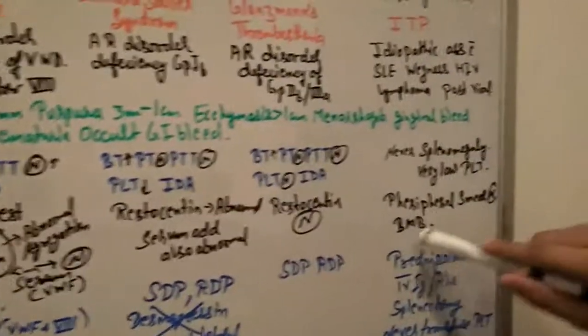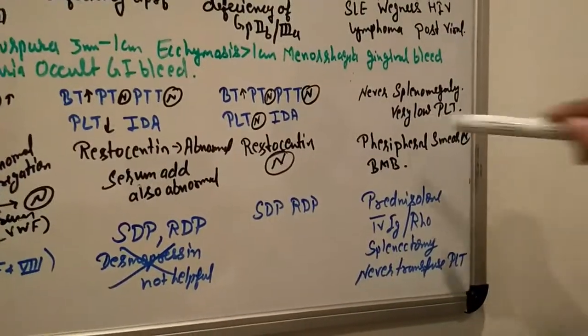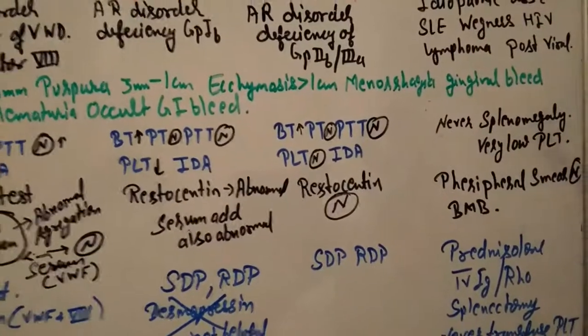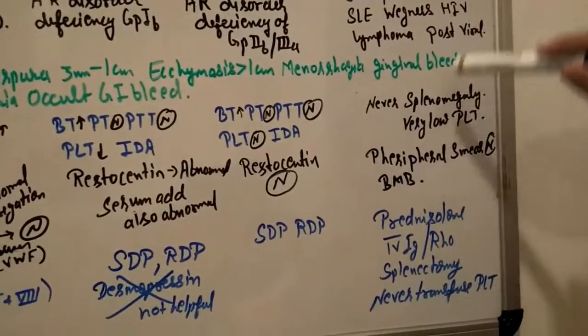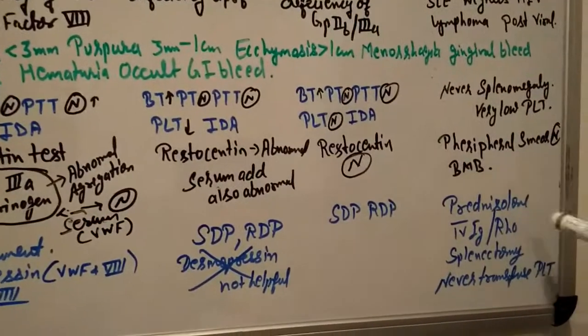Why do we need to give immunosuppressants like prednisolone? Because the autoimmune system is working excessively, idiopathically eating platelets one by one. That's why there is severe platelet deficiency. Remember, treat with steroids or in severe cases splenectomy, but never transfuse platelets.